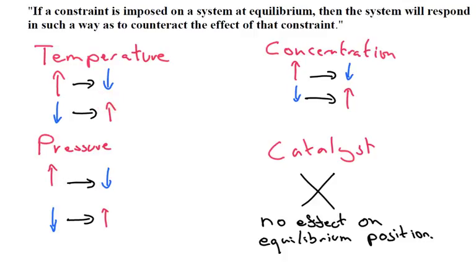If you increase the concentration of one of the chemicals, the equilibrium position will move to try and decrease that concentration. But if you try and decrease the concentration — remove something — the equilibrium position will shift to try and increase the amount of the substance you've just removed.